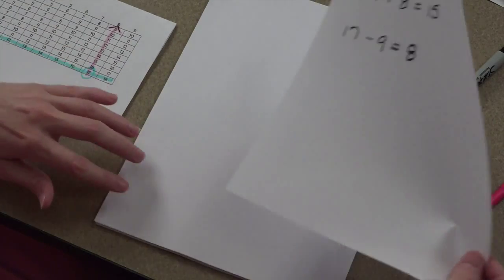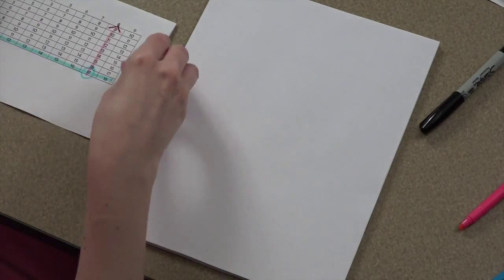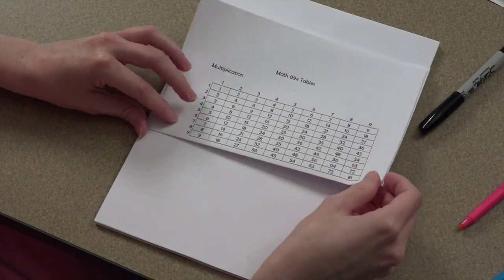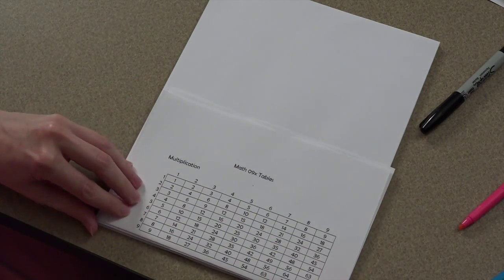Now that we're done with addition and subtraction, let's go to multiplication. This is at the top. This is the first table of your addition and multiplication tables.